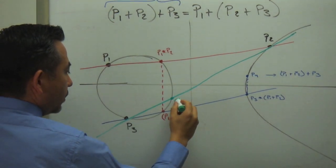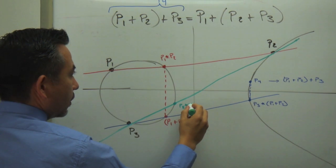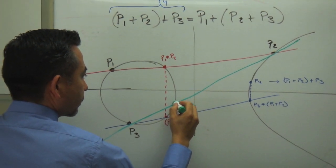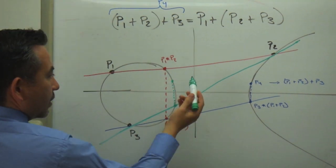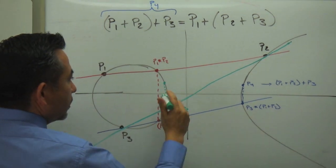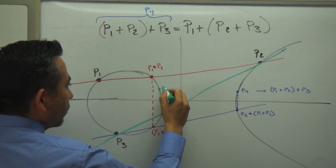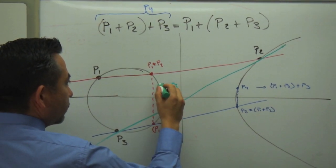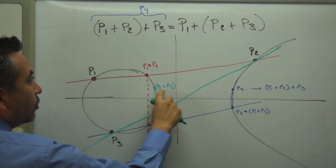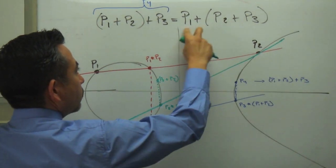So this point is becoming P3 ⊕ P2. If I reflect this point, something like that, so this point is P3 + P2, this point. Now, I will add this P3 plus P2, which is this, to P1. And this is P1.